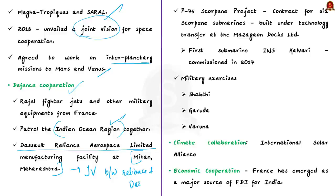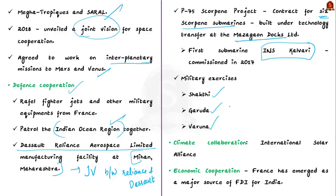Another important project is the P-75 Scorpene Project — a contract for six Scorpene submarines to be built under technology transfer at Nagpur in Maharashtra. The first submarine under this project was commissioned in December 2017 and named INS Kalvari. India and France also conduct periodic military exercises such as Shakti, Garuda, and Varuna exercises annually.